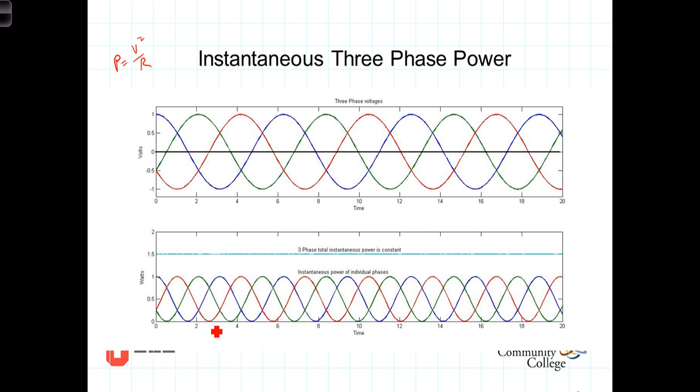The currents are going to be less. For a given voltage, the currents will be less, and so the winding wires need to be smaller. You also end up with less I-squared R loss in a three-phase motor. So they tend to be more efficient and run less hot. So in general, a three-phase motor is going to be smaller in size and run more efficiently.